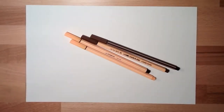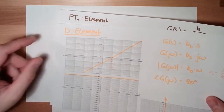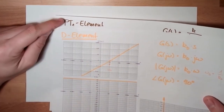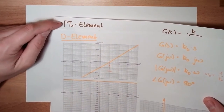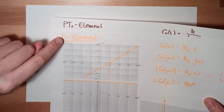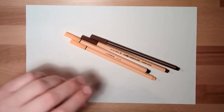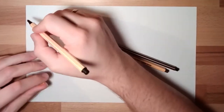Hello and welcome to our next video about standard elements. The basic base elements are already handled. This time we're going to talk about the first combined element — the dt1 element, which results from combining a differential element (D) and a first-order delay element (PT1). This is what we're going to talk about: the dt1 element.